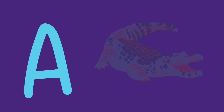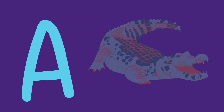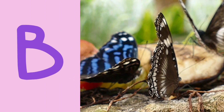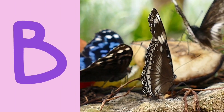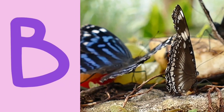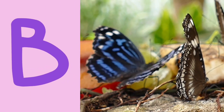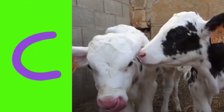Let's learn ABC Animals. A is for Alligator. B is for Butterfly. Butterfly.